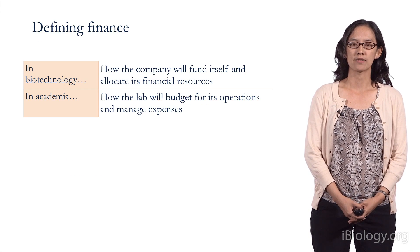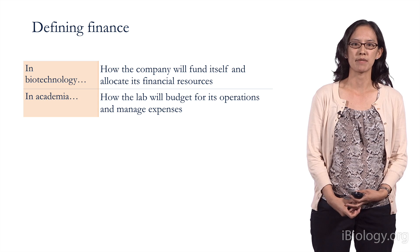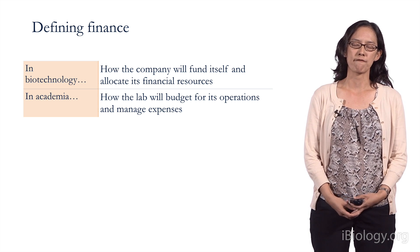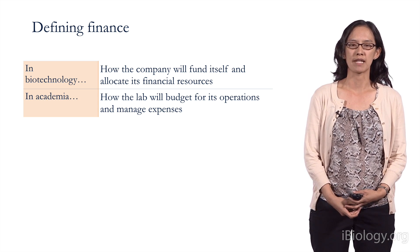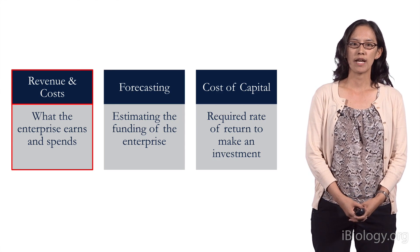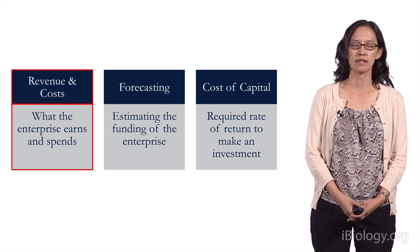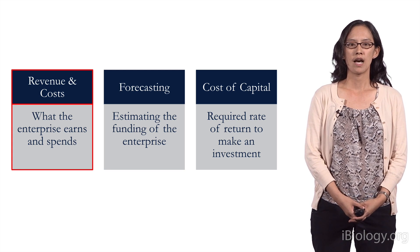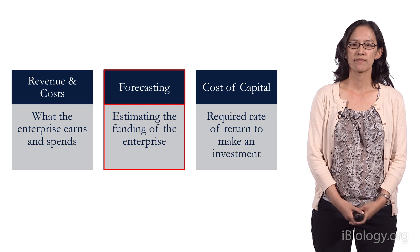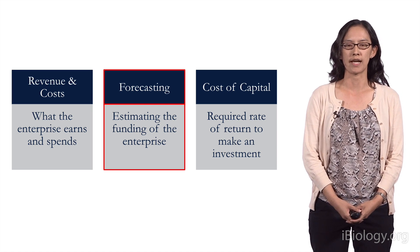As it turns out, figuring out finance in academia is not that different from in biotechnology — it just has a lot fewer complicated financial models. You have already heard from Jashan about revenue and costs and what an enterprise needs to earn to cover its costs, and you've also heard about forecasting and estimating the funding of an enterprise.